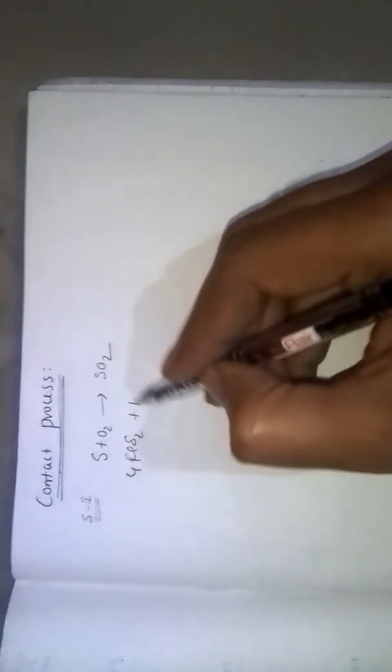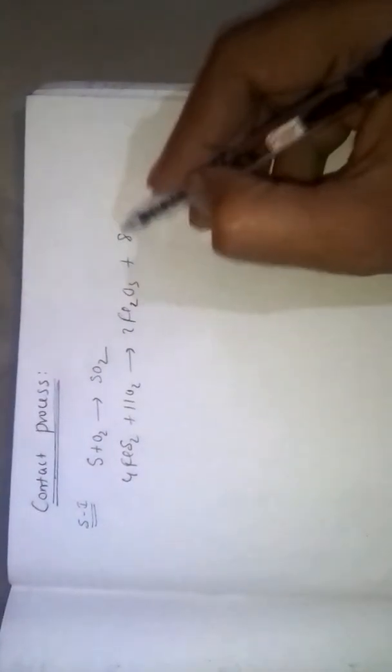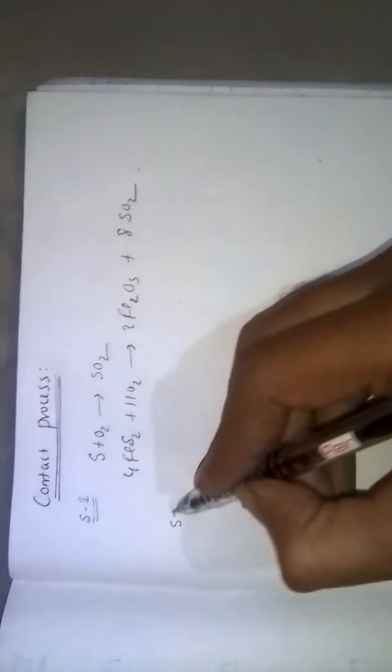4FeS2 plus 11O2 gives 2Fe2O3 plus 8SO2. The formed sulphur dioxide is converted into sulphur trioxide in step 2.